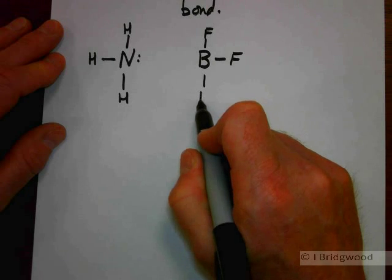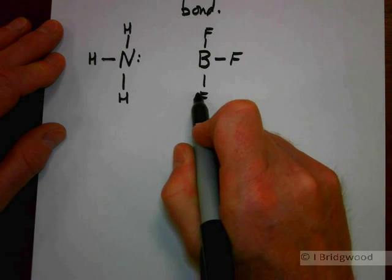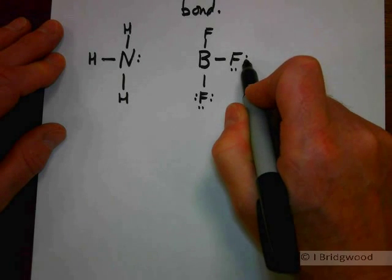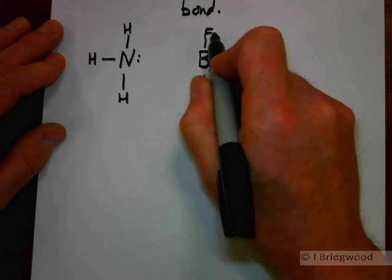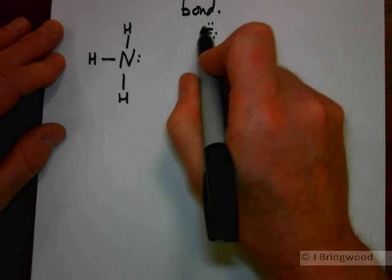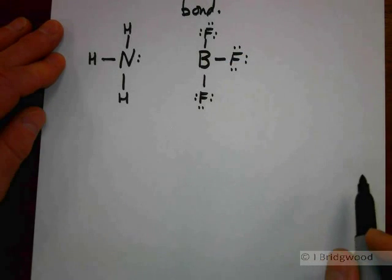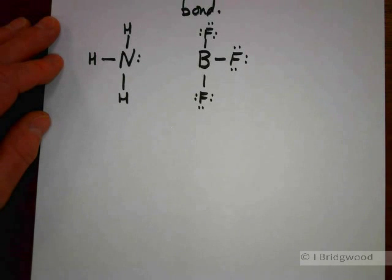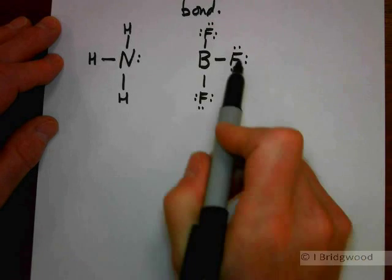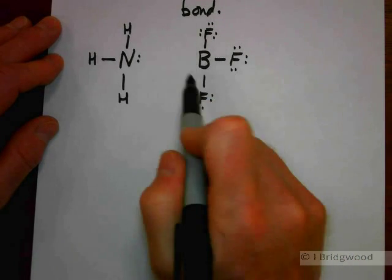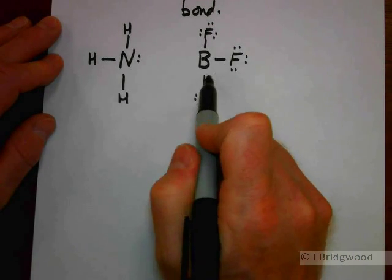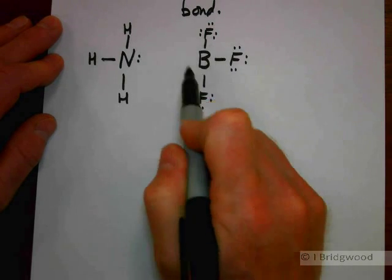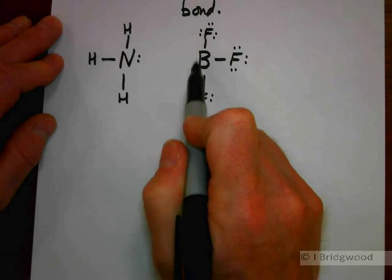Boron, which is in group three of the periodic table, has three electrons in its outermost shell and can use all three electrons in covalent bonding with three fluorines. Each fluorine will only form one covalent bond. It uses all three electrons, but that means it only has six electrons in its outermost shell. It has a vacant orbital.